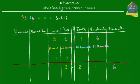So 3, 2, 1, 6 — the same set of digits — but the decimal point has moved one place to the left, giving the answer 3.216. The trick to dividing a decimal number by ten is to simply move the decimal point one place to the left. To remember how many places to move, just count the number of zeros you're dividing by — one place to the left because ten has one zero.